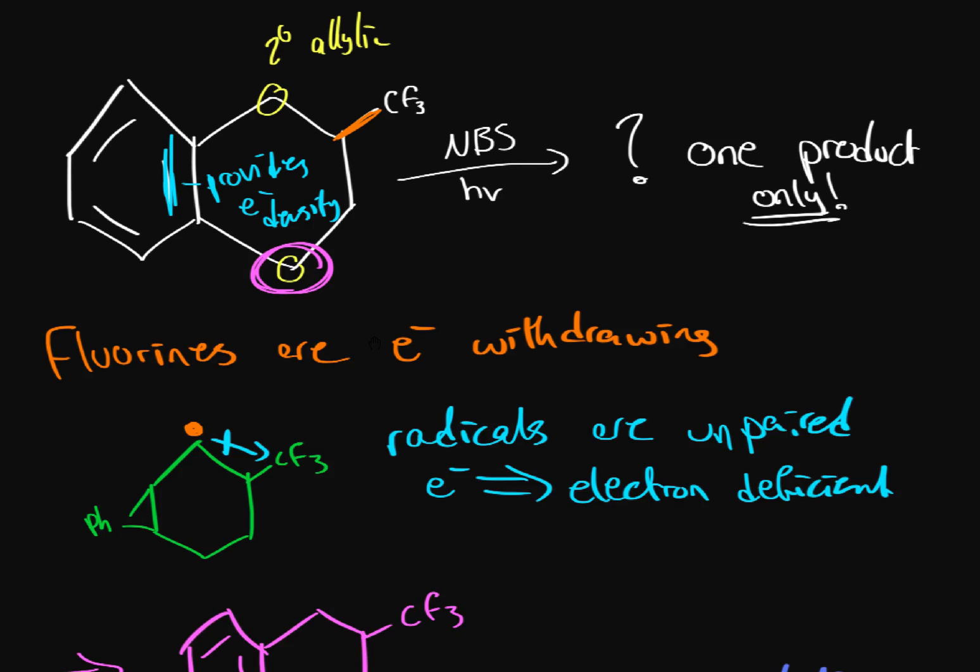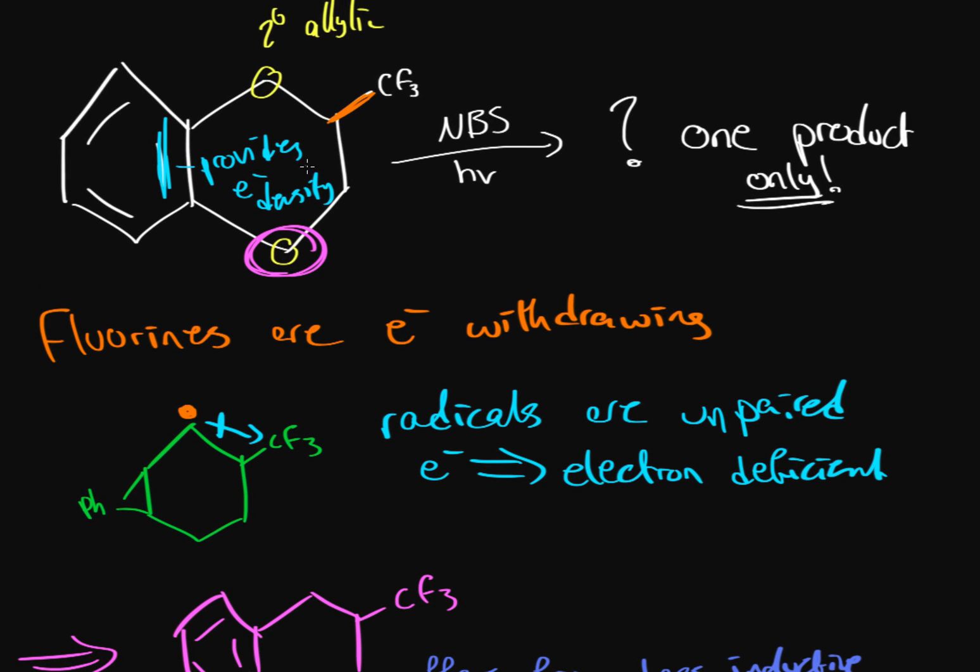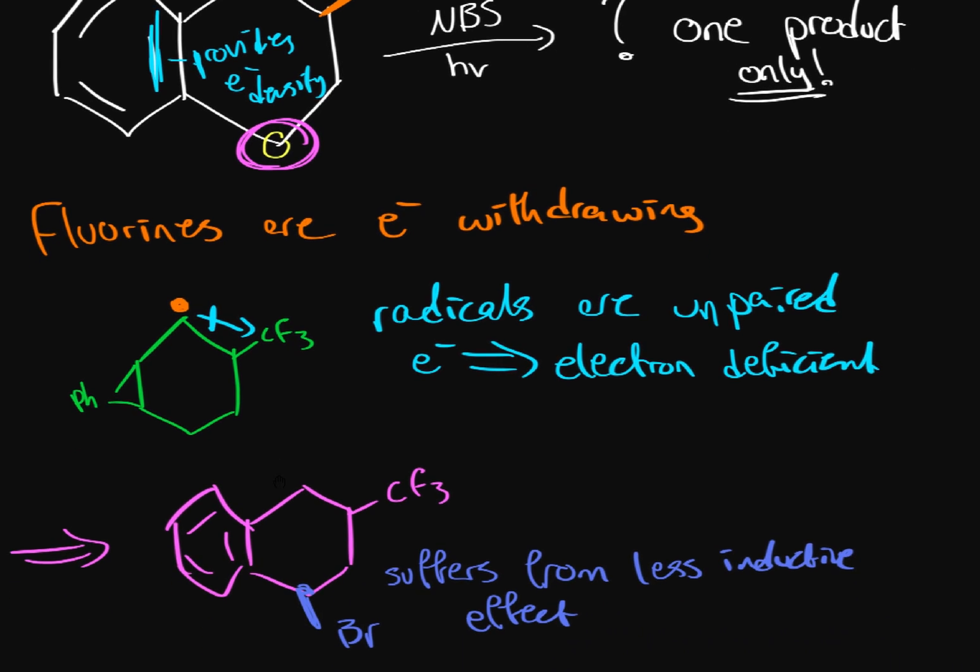So how do we pick the bromine for this molecule? We just look at the most stable carbon, and if we have inductive effect, we just have to remember the inductive effect is electron withdrawing and that makes it less stable.